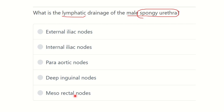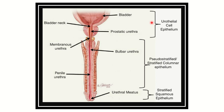So we have to find out which lymph node group the spongy urethra drains into. First of all, we can see the different parts of the male urethra. The spongy urethra is also known as the penile or bulbar urethra, and we need to find the lymphatic drainage of this part.